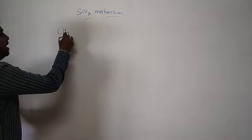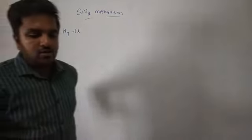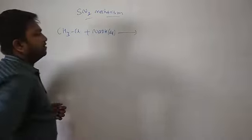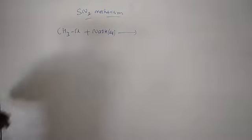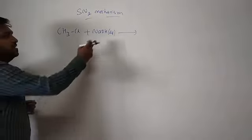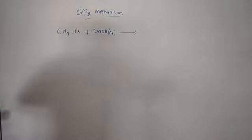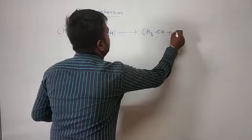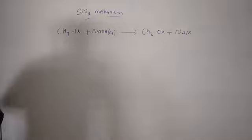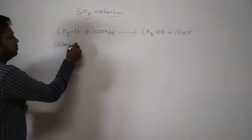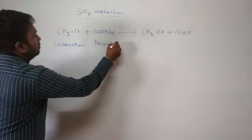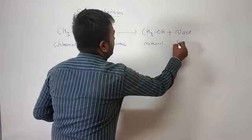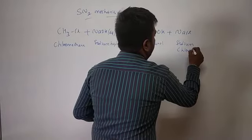Let us take the example of methyl chloride (chloromethane). When chloromethane is reacted with aqueous sodium hydroxide, a nucleophilic substitution reaction takes place. The nucleophile OH⁻ attacks. The products are methanol (CH₃OH) and sodium chloride. So: chloromethane + sodium hydroxide → methanol + sodium chloride.